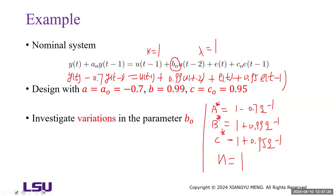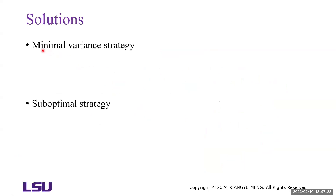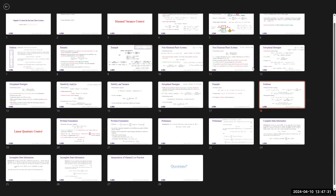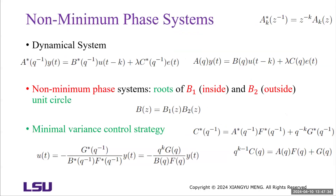Next, let's design the minimum variance controller. We use the equation C* = A* times F. Because F has order k minus 1, and k is 1, F is just a constant equal to 1. Then we have Q to the negative 1. The order of G is n minus 1, so G is also a constant — let's call it just G.